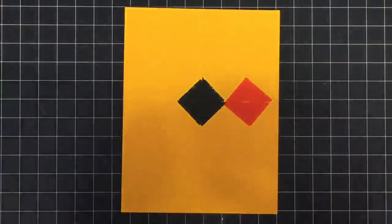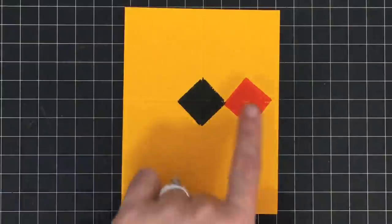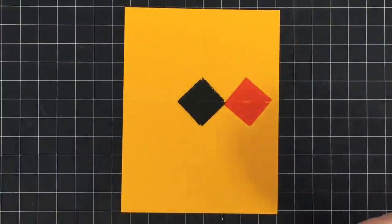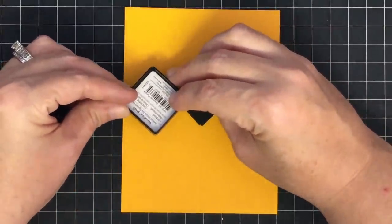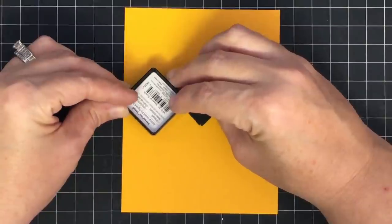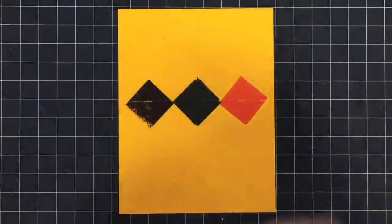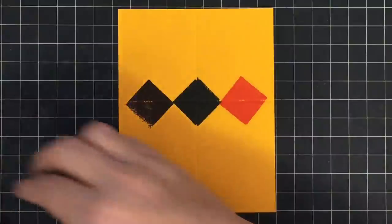Don't worry if you don't get full impressions and don't worry if it's not perfectly perfect. You see how that one's a little tilted? This can look like texture and that'll be fine. Now I'm going to take this guy and go right next to it, using those corners to help me line it up and stamp that one down.